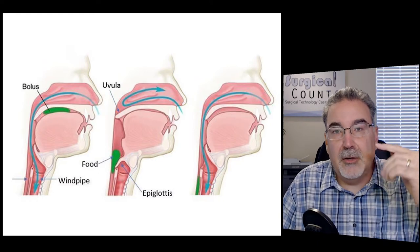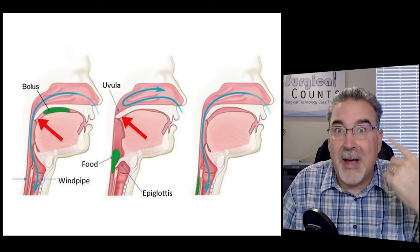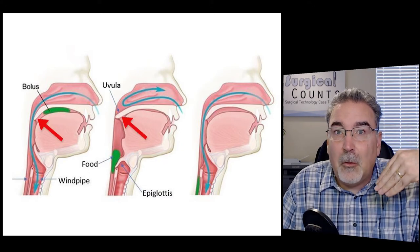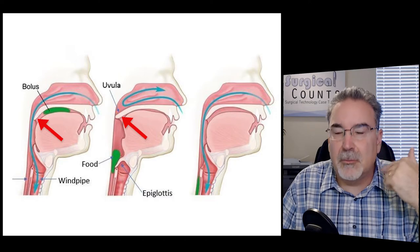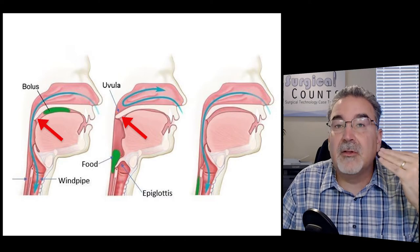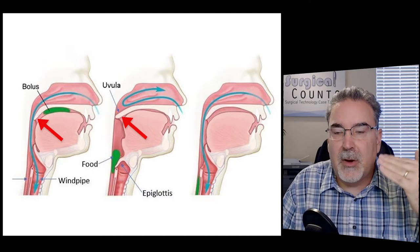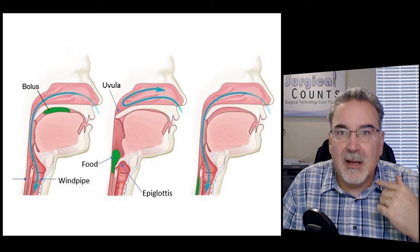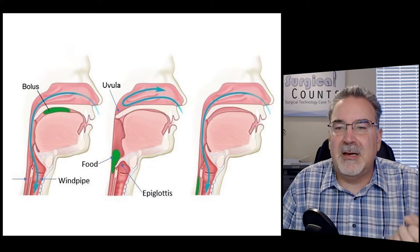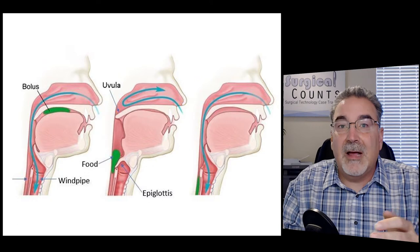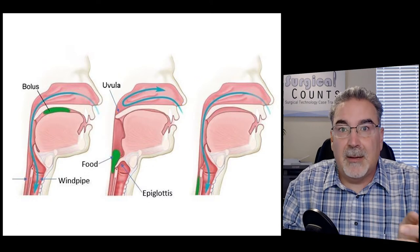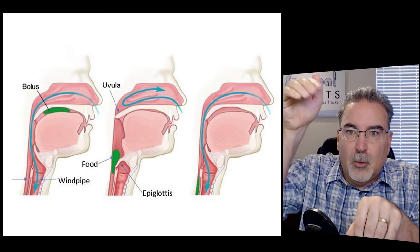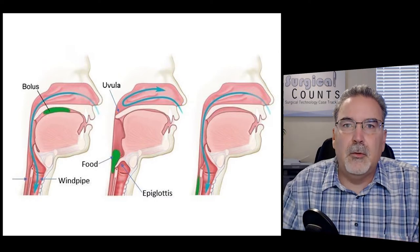The epiglottis stands upward when you're breathing and folds downward to cover the trachea when you're eating. At the other end, you have the uvula — that little thing in the back of your throat that hangs down. It folds back to cover the nasal passage, separating it from the rest of the throat so that when you're eating, you don't get food going back up into the nasal cavity. The uvula acts very similar to the epiglottis — they both close off their sections of the airway to allow food to pass through.